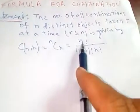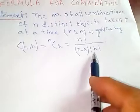C(n,r) = nCr = n! divided by (n-r)! times r!